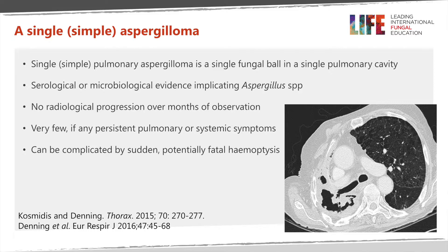With a simple aspergilloma, what one tends to see is a cavity with fungal matter inside. There will almost always be evidence of aspergillosis infection, either from raised serology or culture from the cavity. The difference from CCPA is that in simple aspergilloma patients are normally asymptomatic. However, a patient who has been asymptomatic for some time can develop sudden severe haemoptysis which can be life-threatening, so simple aspergilloma is not a benign condition. Some people therefore have surgery to remove the risk of future catastrophic haemoptysis.